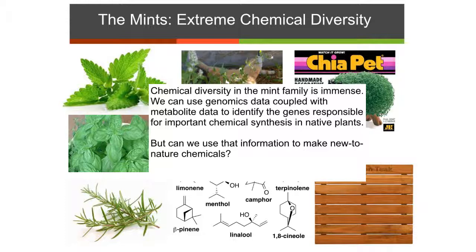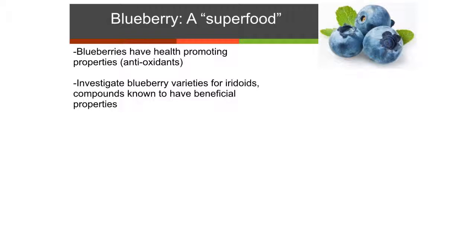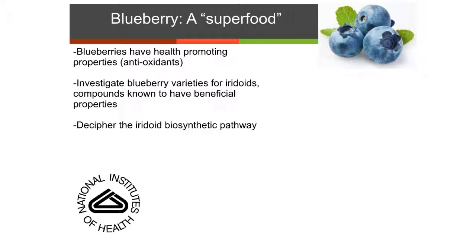The last project is on blueberries — and if you didn't know, Michigan is the number one blueberry state. They're also considered a superfood. They have a lot of antioxidants, and they've also been reported to have compounds called iridoids, which are known to be beneficial chemicals. We're going to work on this project to decipher the iridoid biosynthetic pathway. This will support an NIH postdoctoral fellowship that Courtney Leisner in my lab recently received, and we'll be looking at secondary metabolites in blueberries.